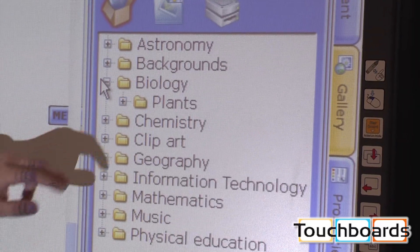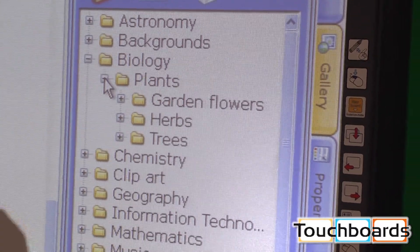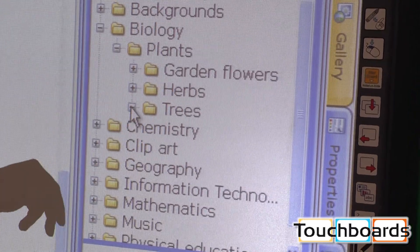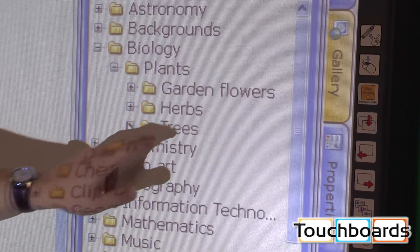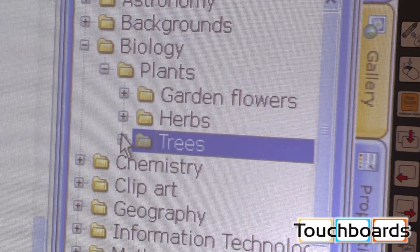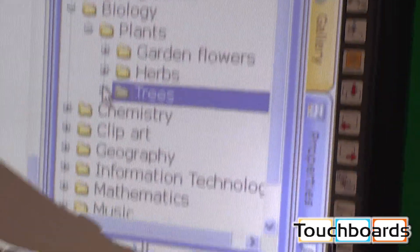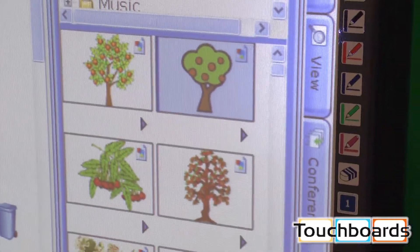Let's click on biology. All that's there right now is plants. You can go to trees. You can see we have pictures of trees. We've got a nice little apple tree here. We can drag that in there.